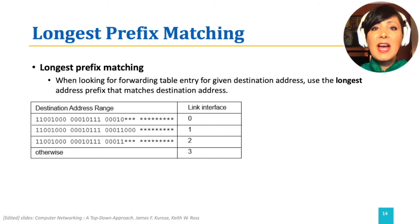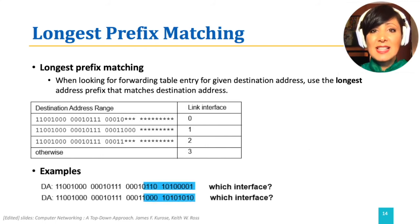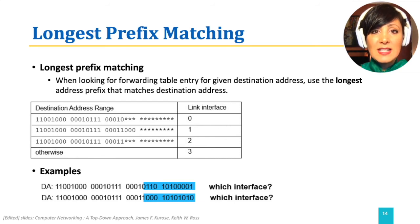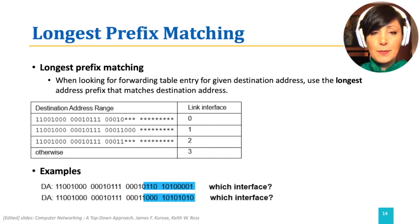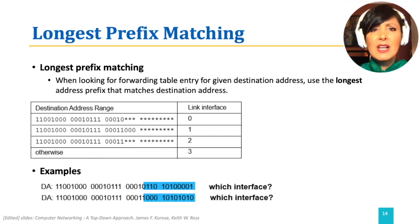For example, if we have a destination address with the last 16 bits of 0001 0110 1010 0001, as in the first address in the examples, we will use output port 0, as it matches with the most number of bits with the first row. The second number in the example, though, would match with both the second and third row entries. However, since it has the longest match with the second row, it will use output port 1.